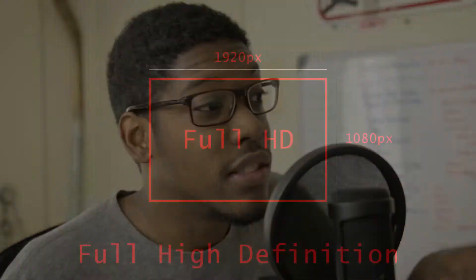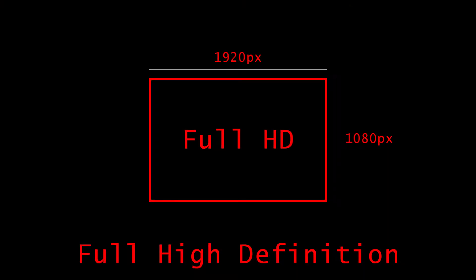Continuing that trend, it is full high definition, also known as full HD — that is 1080p. That is what you see when you play video games, watch movies, watch TV. Whenever you see something advertised as full HD, that is what they're talking about. It is 1920 pixels horizontal and 1080 pixels vertical. That is full HD, and that's what we're used to seeing.